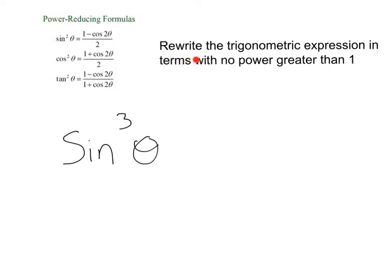So, let's use these to rewrite some trig expressions in terms of no power greater than 1, starting with sine cubed theta. Now, you might notice that this is a cube, which does not align with any of our power reducing formulas. So, your first goal is going to be to rewrite your trig expression in terms of something squared, so you can apply these identities.